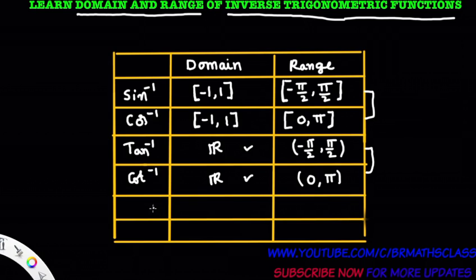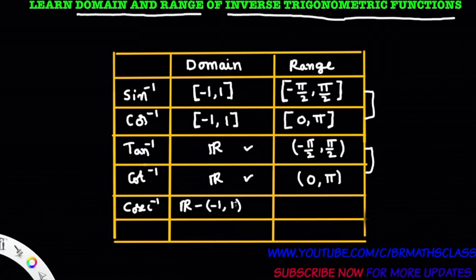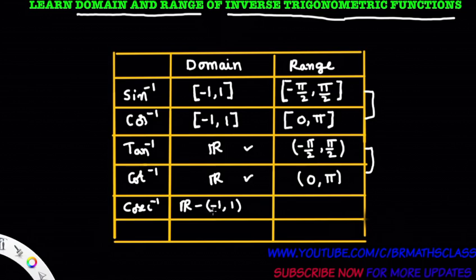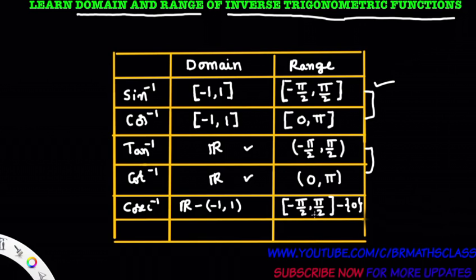Now we will see domain and range of cosecant inverse. Cosecant inverse is a function whose domain is all real numbers except the values of the open interval minus 1 comma 1, written as R minus open interval minus 1 comma 1. The range of cosecant inverse is the closed interval minus pi by 2 comma pi by 2 minus the singleton set containing 0.